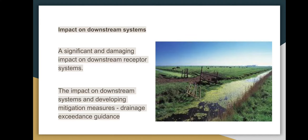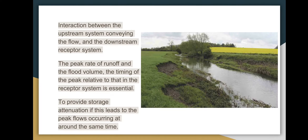The impact on downstream receptor systems: the rapid transfer of exceedance flow over the surface can have a significant and damaging impact on downstream receptor systems. The situation is compounded when such systems are themselves subjected locally to the effects of an extreme event at the same time, imposing significant additional liabilities on stakeholders. Detailed advice on assessing the impact on downstream systems and developing mitigation measures is given in the drainage exceedance guideline.